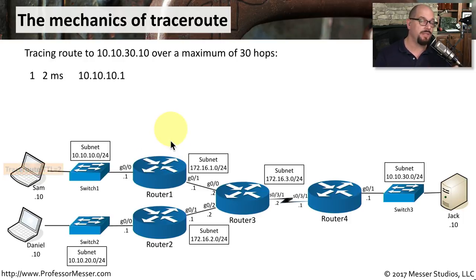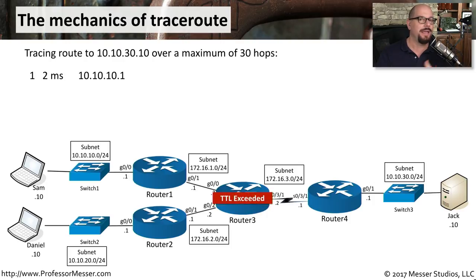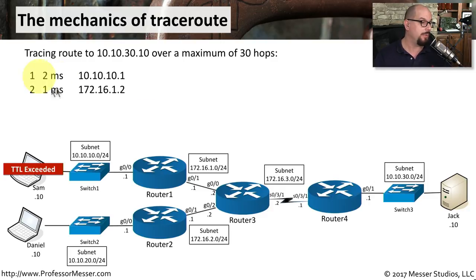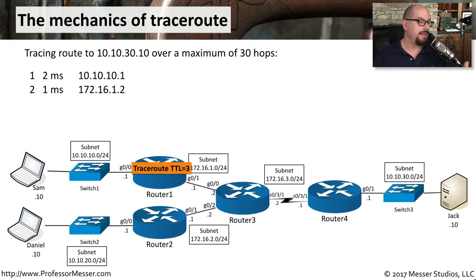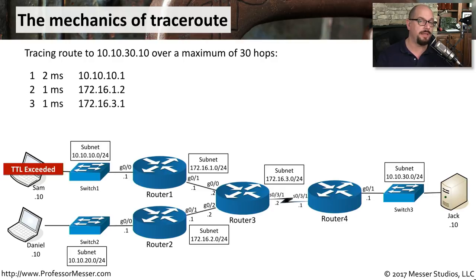Sam then sends another message with a TTL of 2. It passes through the first router, decreases by 1, then at the second router the TTL hits 0 and is exceeded again. A message is sent back to Sam, who notes the second hop's IP address. The process repeats with a TTL of 3, getting through the first two routers and expiring at the third, whose IP address is added to the traceroute.